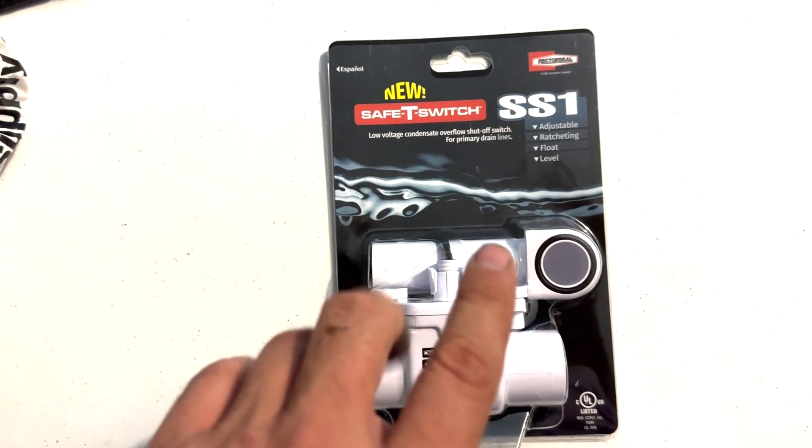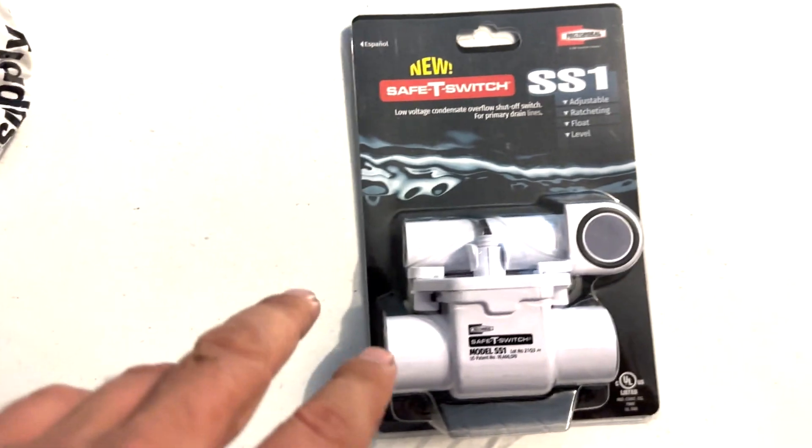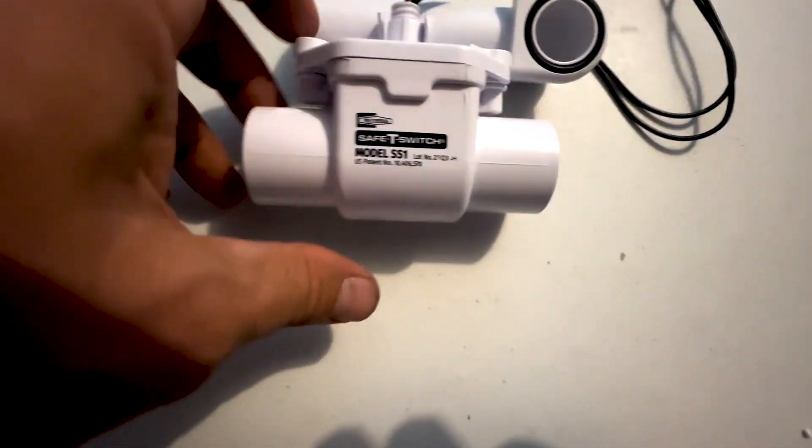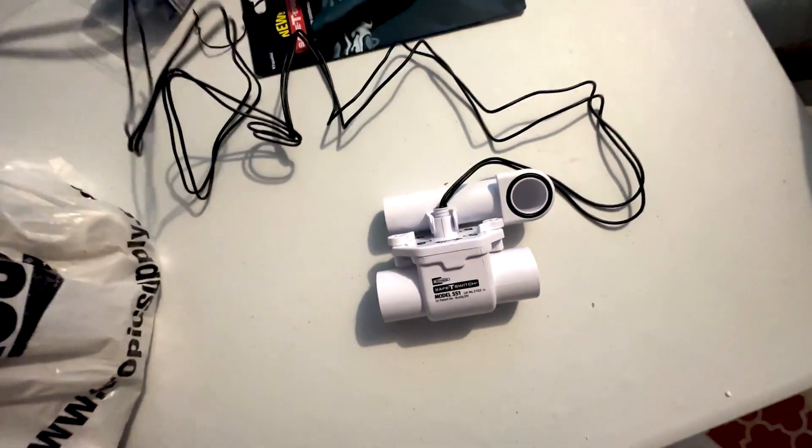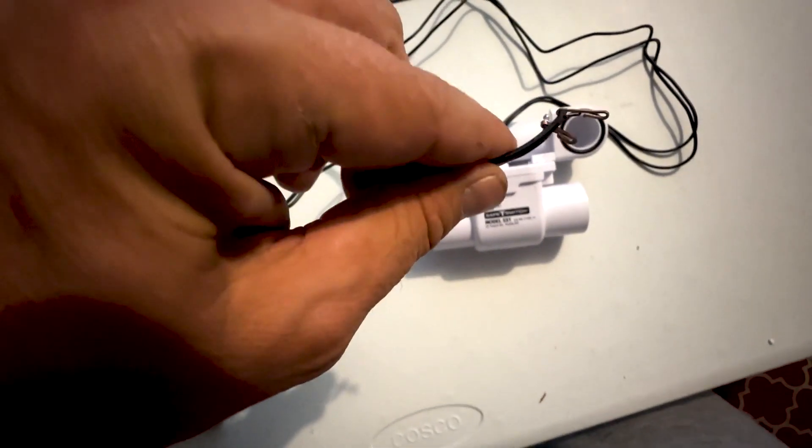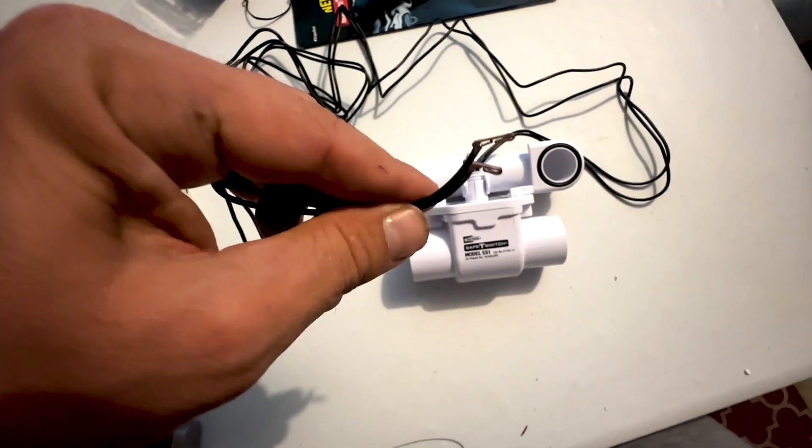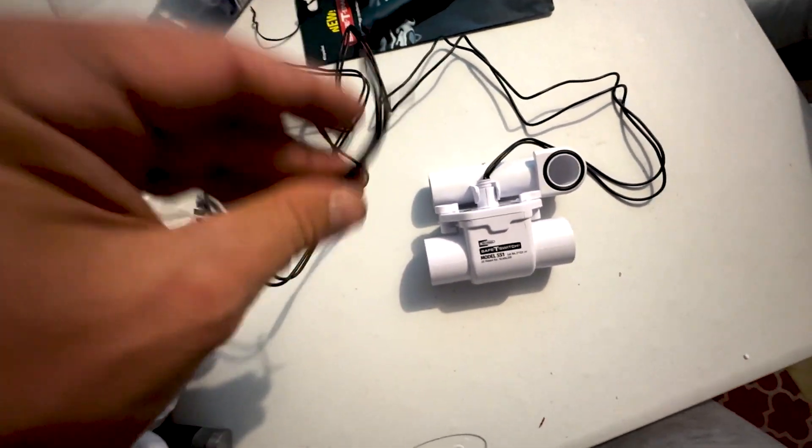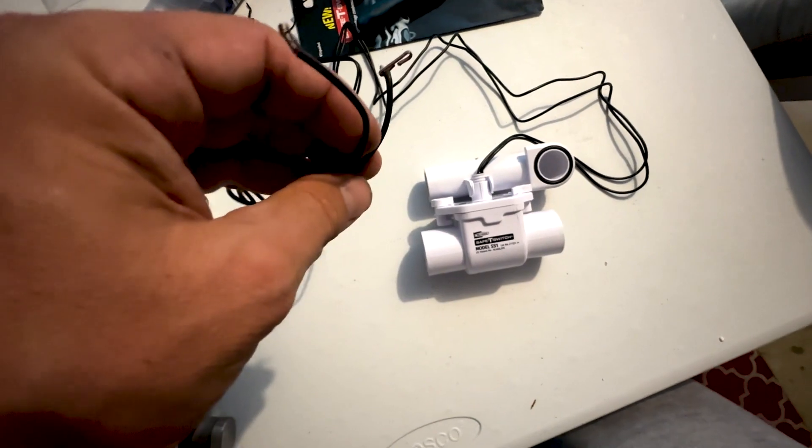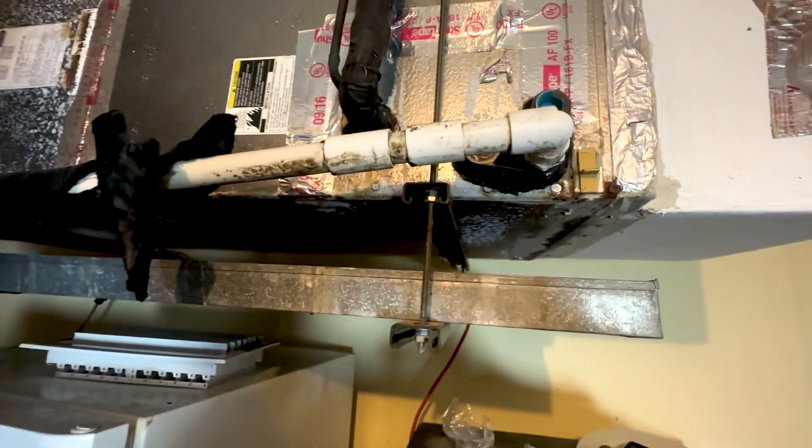Now, this is going to go directly onto our drain line. So we've got the safety switch, and then it has a wire connected to it. The wire has these two staples here on the end. We're going to cut those off, and we're going to cut back the wire so that we can wire it in to our existing low voltage line.